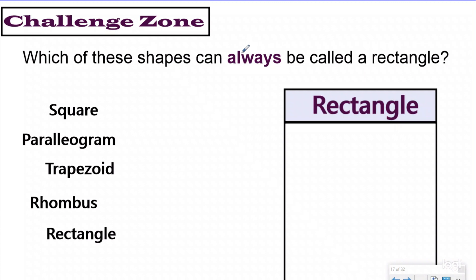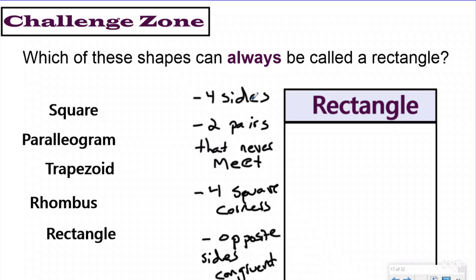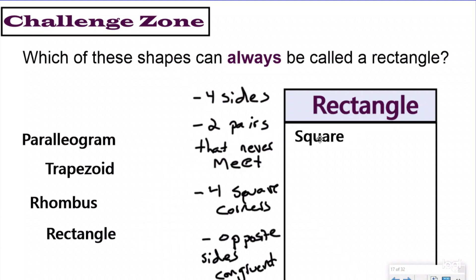To be a rectangle, a shape must have four sides, two pairs of opposite sides that never meet (parallelogram), four square corners, and opposite sides that are congruent. Now let's check: a square has four sides, two pairs that never meet, four square corners, and congruent opposite sides — so a square can also be called a rectangle. If you can't visualize a shape, draw it out — that's a great problem-solving strategy.